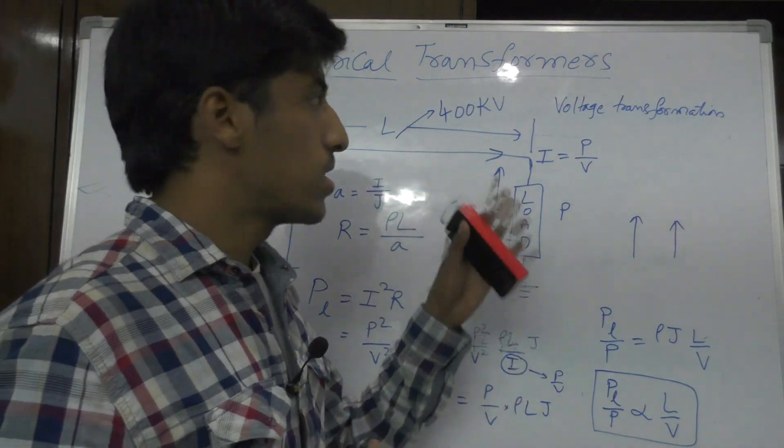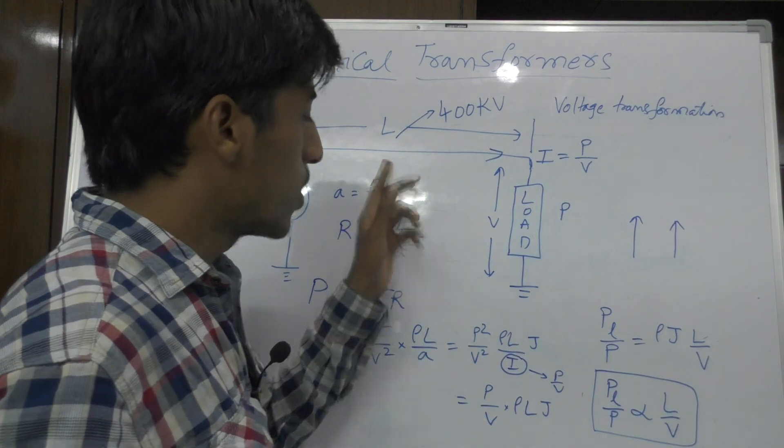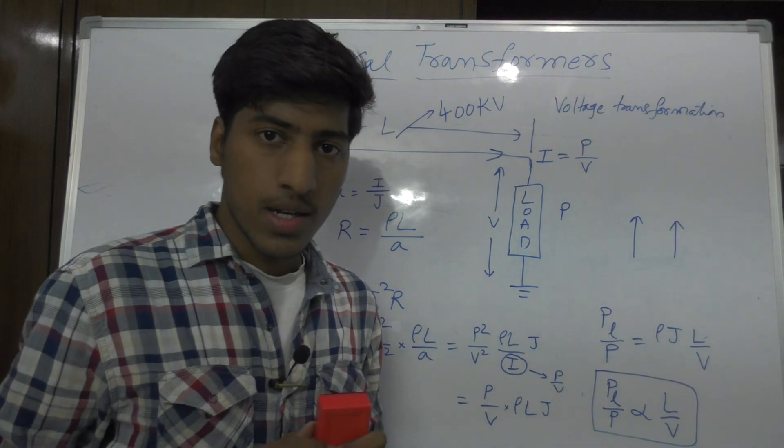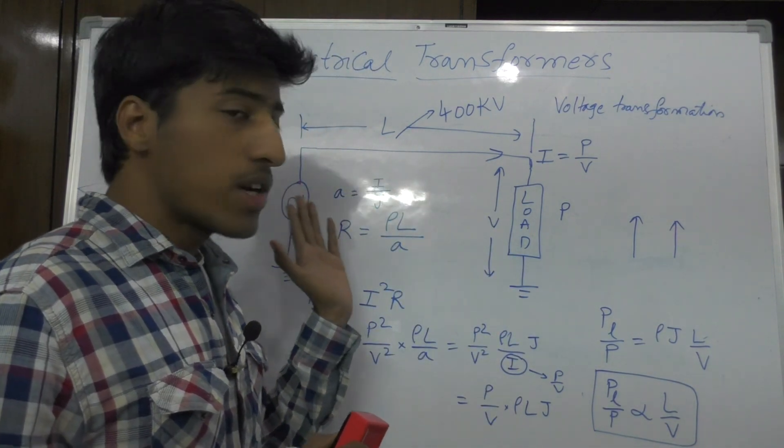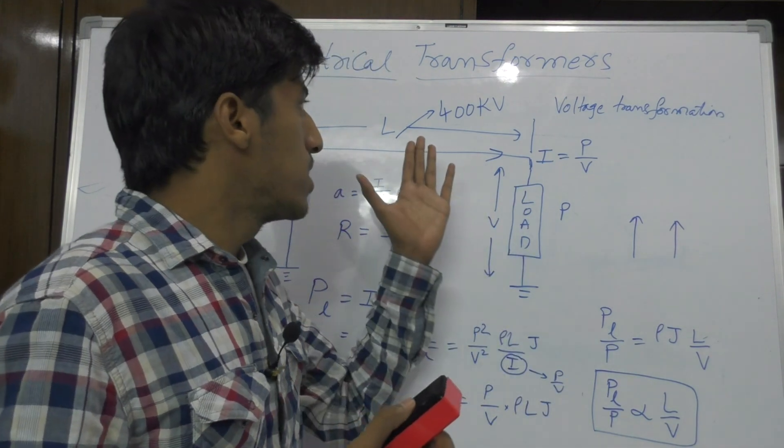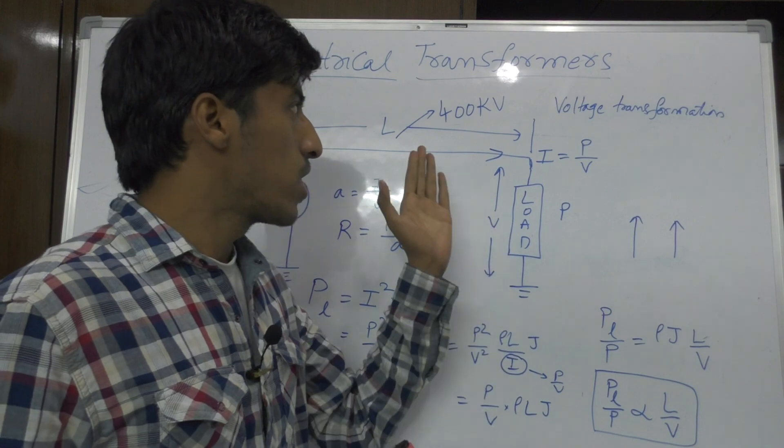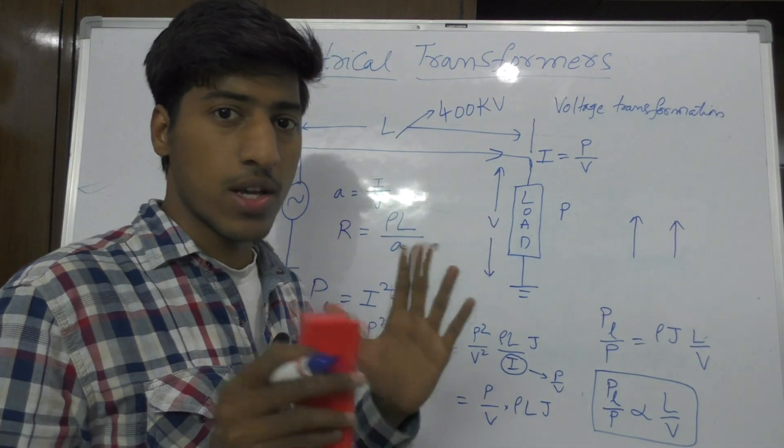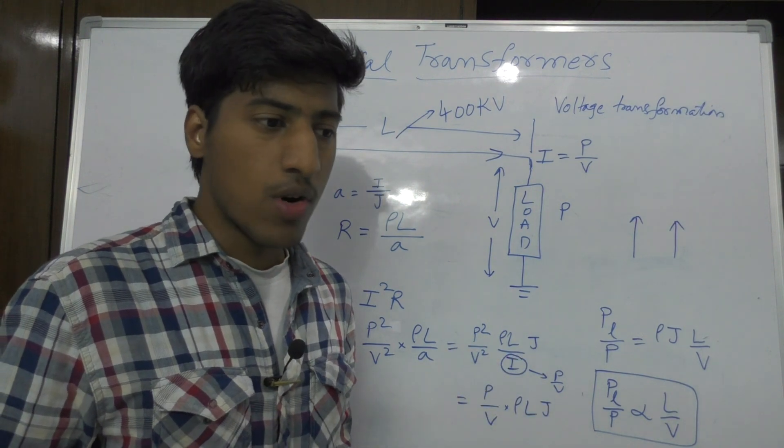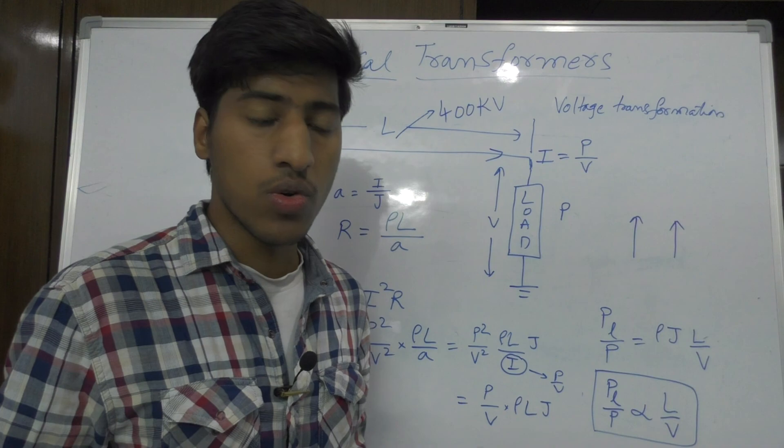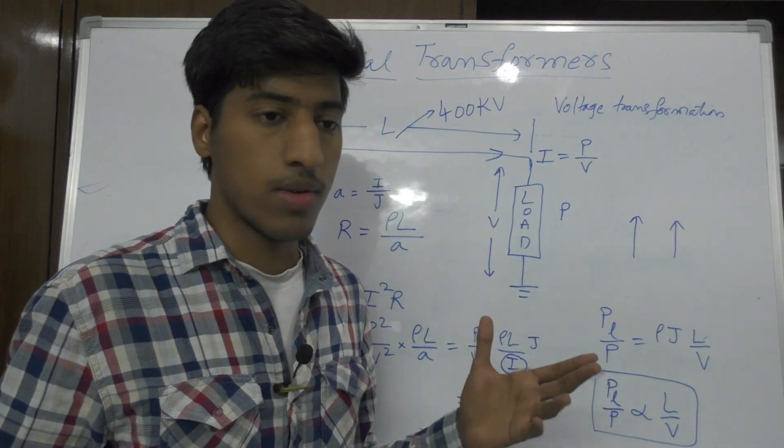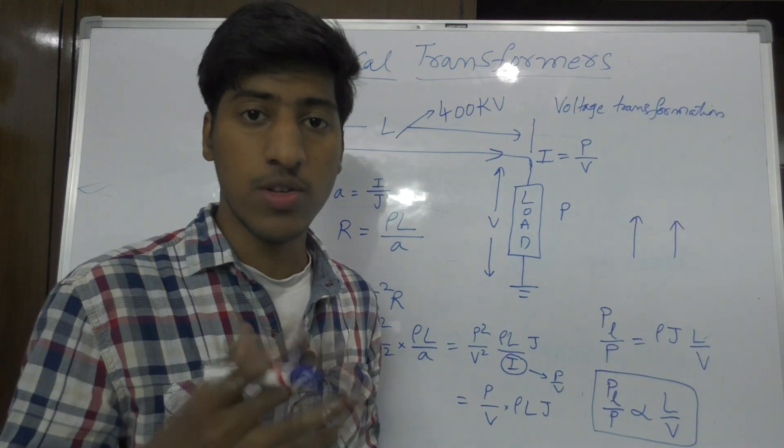400 kV. This high voltage will be used for transmission to reduce power losses. Now, but the problem is that generators which are present in the power stations cannot generate this high amount of voltage, 400 kV. There will be some, it will be very difficult because due to some structural constraints and also the insulation required for producing that much of high voltage is very difficult. Providing insulation is very difficult.